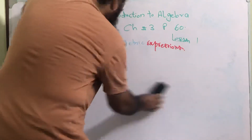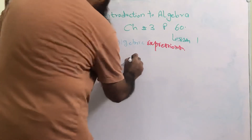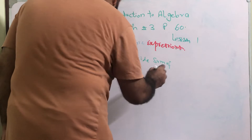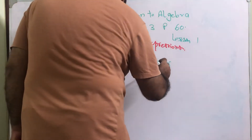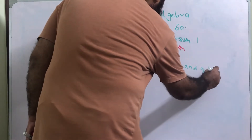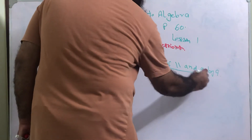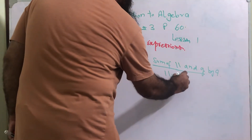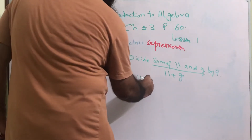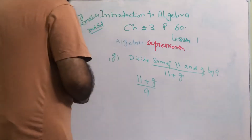Then we go to part g: divide the sum of 11 and g by 9. So the sum of 11 and g is 11 plus g. We have to divide this sum by 9, so the answer is (11 + g) over 9.